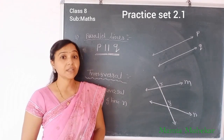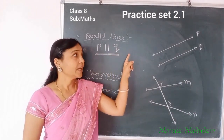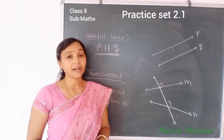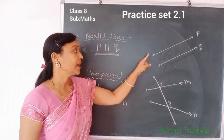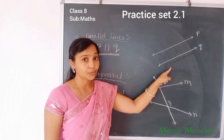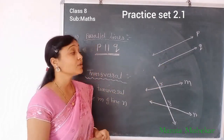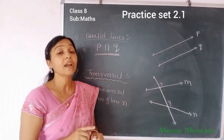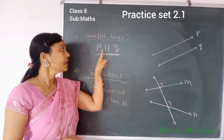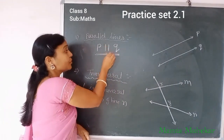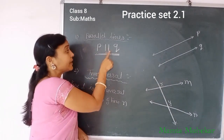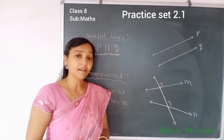First, we see the concept of parallel lines. We can define the lines which are lying in the same plane and they do not intersect anywhere — those lines are called parallel lines. For example, line P and line Q are parallel lines because these lines are in the same plane and they do not intersect anywhere. We can denote this as line P parallel to line Q. This is the notation of parallel lines.